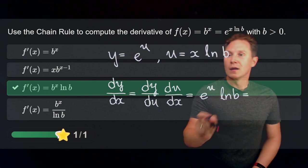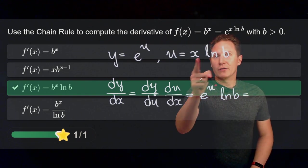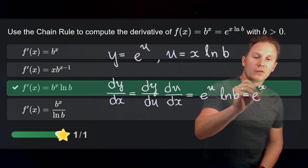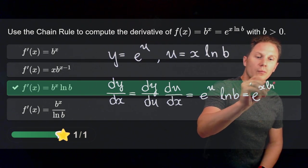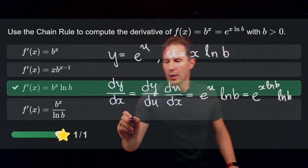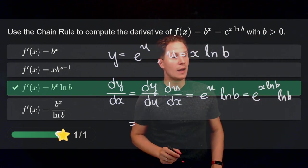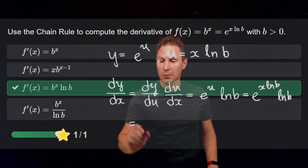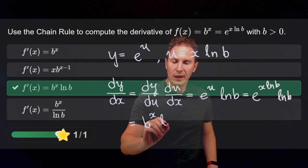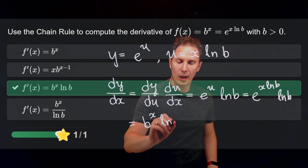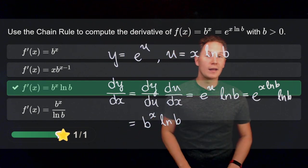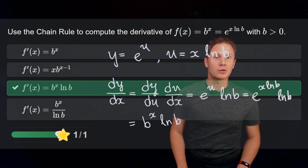Substituting x times ln of b back in for u, we get e to the x times ln of b, times ln of b. Turning e to the x times ln of b back to the form b to the x, we get for the derivative b to the x times the natural logarithm of b, and now we can differentiate every exponential function.